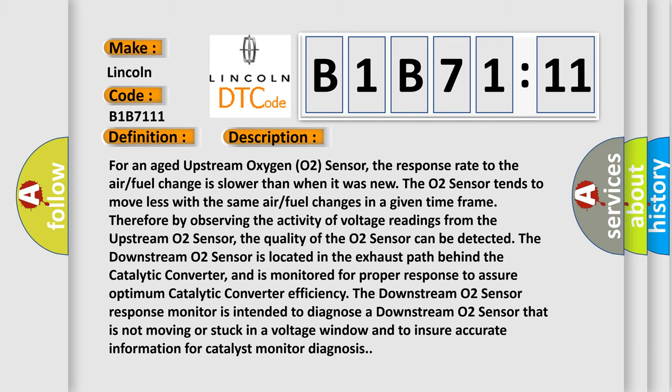The downstream O2 sensor is located in the exhaust path behind the catalytic converter and is monitored for proper response to assure optimum catalytic converter efficiency. The downstream O2 sensor response monitor is intended to diagnose a downstream O2 sensor that is not moving or stuck in a voltage window and to ensure accurate information for catalyst monitor diagnosis.